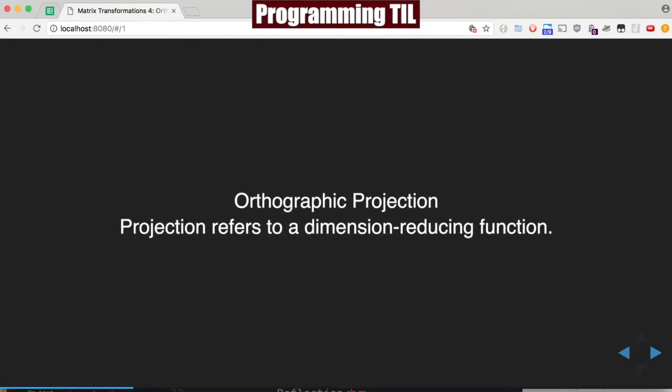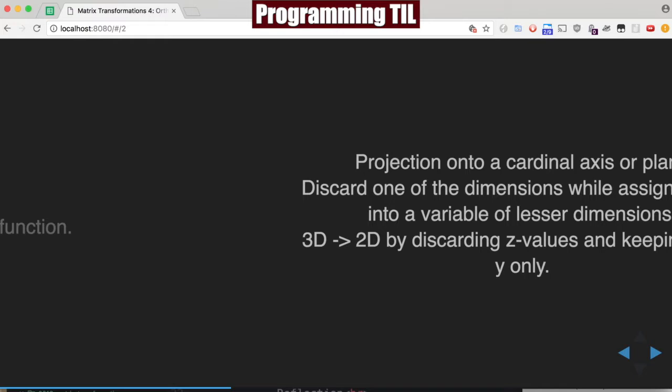So what does orthographic projection mean? Projection refers to any kind of dimension reducing function. Well, what does that mean? It means if you're in 3D and you want to reduce something down to 2D, you're going to do a projection. A good example of this would be something like you have a 3D object, and you take a photograph of it, and now it's on a 2D photograph.